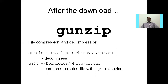The gzip command is used for file compression and decompression. For example: gzip /downloads/whatever.r.gz will decompress a file with the .gz extension. If you write gzip with a .r file, it will compress it and create a new file with the .gz extension.